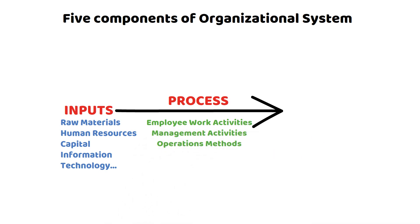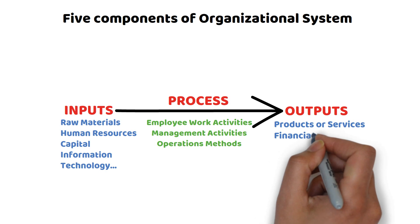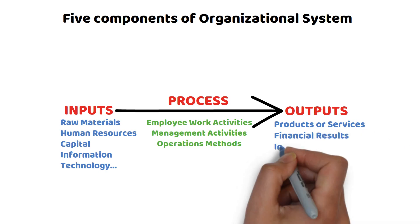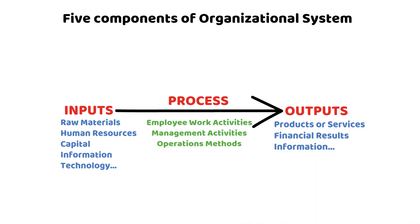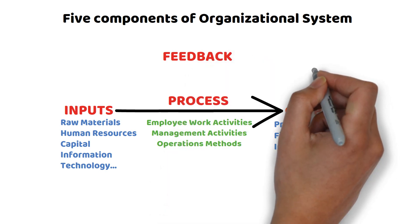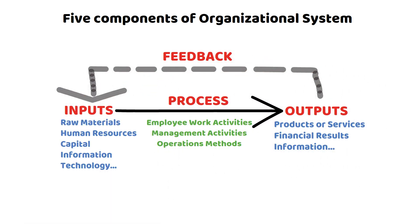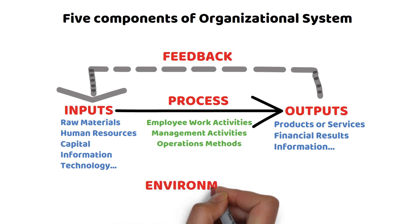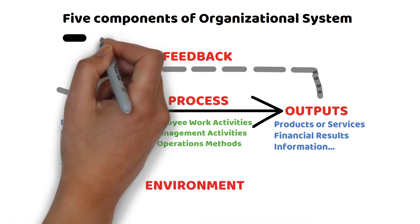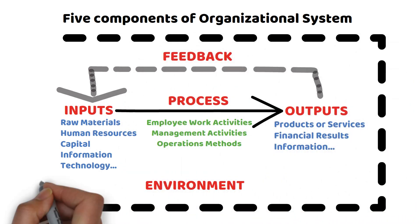Number three, outputs — which may be products or services, financial results, information, and so on. Number four, feedback — results from outputs influence inputs in the form of feedback. Number five, the environment — these components make up internal and external factors that affect the system.